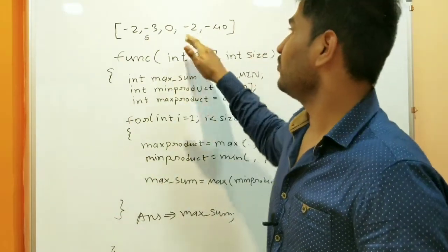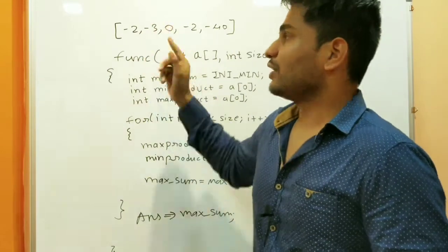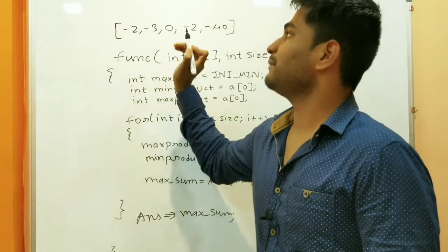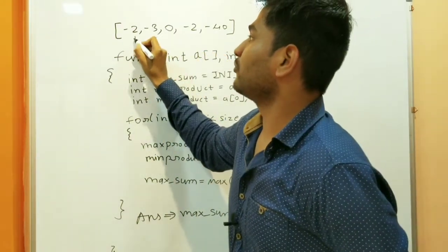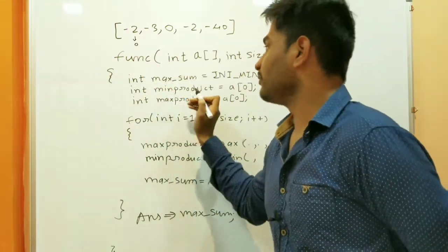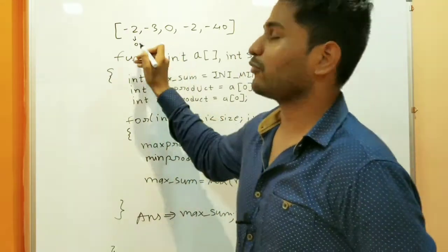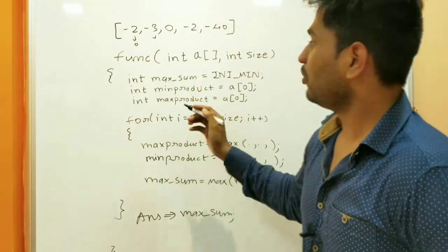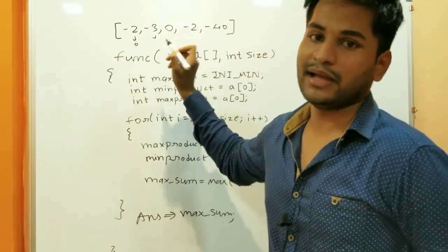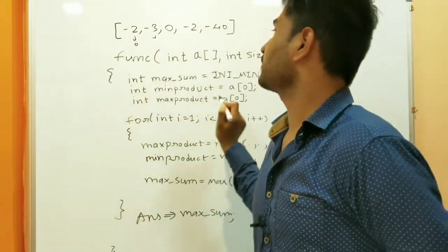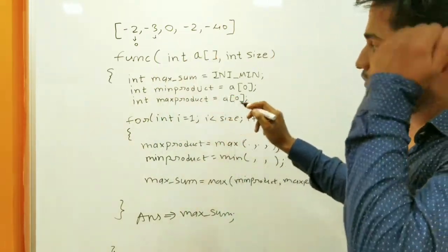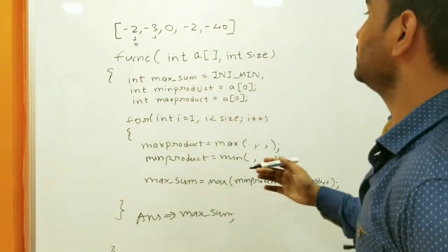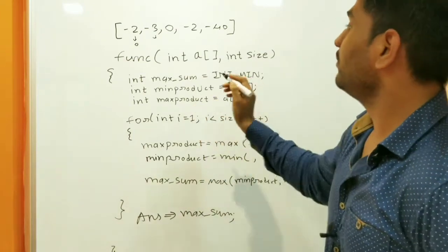We are using the concept of dynamic programming, which tells us to divide the main problem into smaller subproblems. At each index, we find the maximum product subarray and minimum product possible ending at that index. Our overall result is stored in a maximum sum variable.